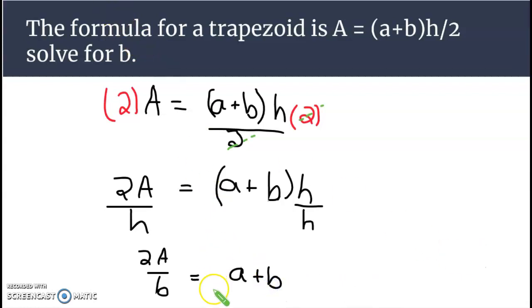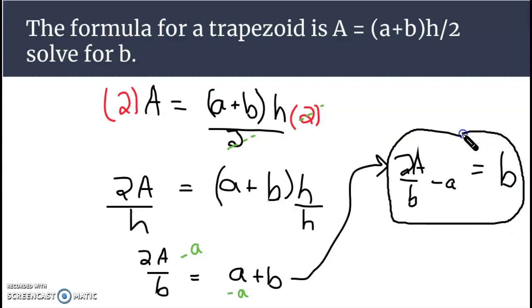All right, and the final step is we're going to be taking away this a from both sides, lowercase a. All right, and I'll clean up the answer a little bit. Over here, b is by itself here on the left side, and we have 2 capital A divided by h minus lowercase a. Yeah, they have two of the same variable but one A stands for area, the capital A stands for area, and the lowercase a is just one of the two bases of the trapezoid. Kind of messy, 2A over h minus a, but that is what we have when we isolate b.